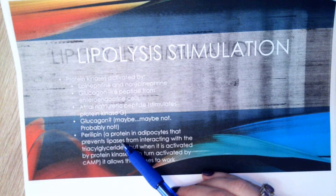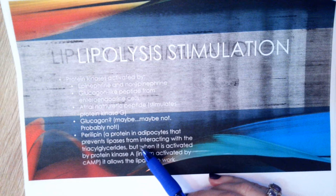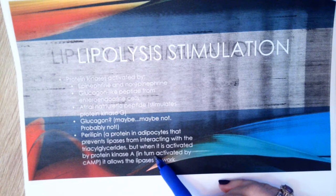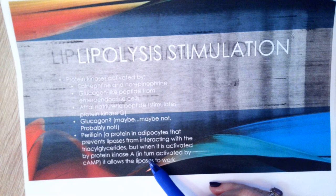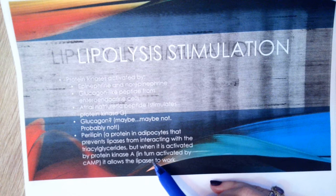But when you stimulate the cell, it activates a kinase called protein kinase A, and protein kinase A itself is activated by cAMP, which is a stimulatory kind of molecule. Once you activate perilipin with protein kinase A, it stops protecting the triacylglycerides from the lipases, and the lipases are able to start the breaking-down process.